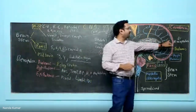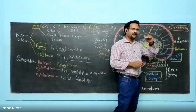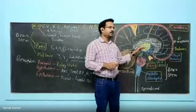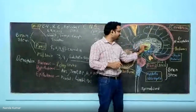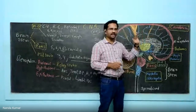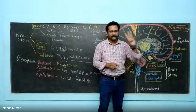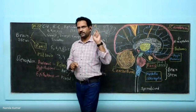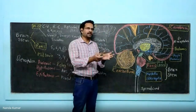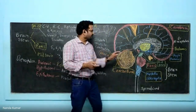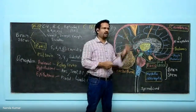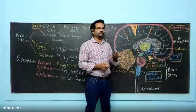After this, diencephalon. 'Dia' means passing through or across, and 'encephalon' means within the head. So these regions are passing through or across the brain or head, hence they are called the diencephalon. There are three major parts: thalamus, hypothalamus, and epithalamus. Thalamus means a chamber place — it looks like a chamber, hence it is called thalamus. All these words are from Greek and Latin.